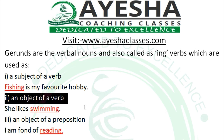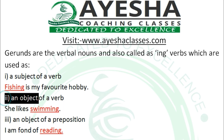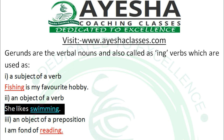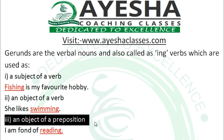The second example is a gerund as the object of a verb. Here we use the gerund as an object of a verb. For example: 'She likes swimming.' You can see that 'swimming' is the gerund used as the object of the verb, because it comes after the verb.